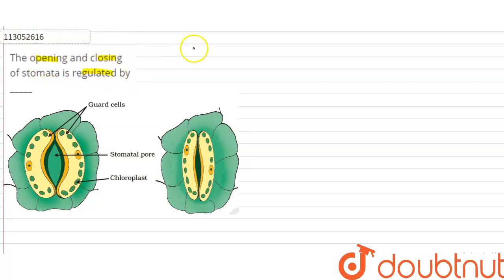So what is stomata? Stomata are tiny pores which are present in leaves. So what do they do? They do gaseous exchange.